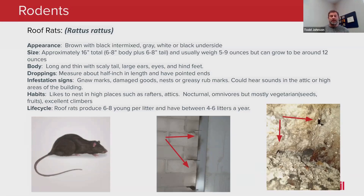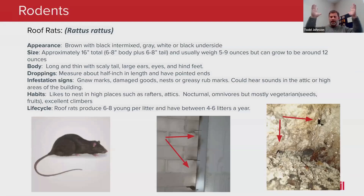That long tail helps the roof rat balance itself in elevated areas. They like to nest in high places like rafters and attics. They're nocturnal, omnivorous, and tend toward vegetation — typically seeds and fruits — making them the vegetarians of the rodents. They're excellent climbers, which is why they prefer to be up high. They'll have about four to six litters with six to eight young each. The key point with all rodents: don't underestimate their population, look for these signs, and when you find them, start taking appropriate action.